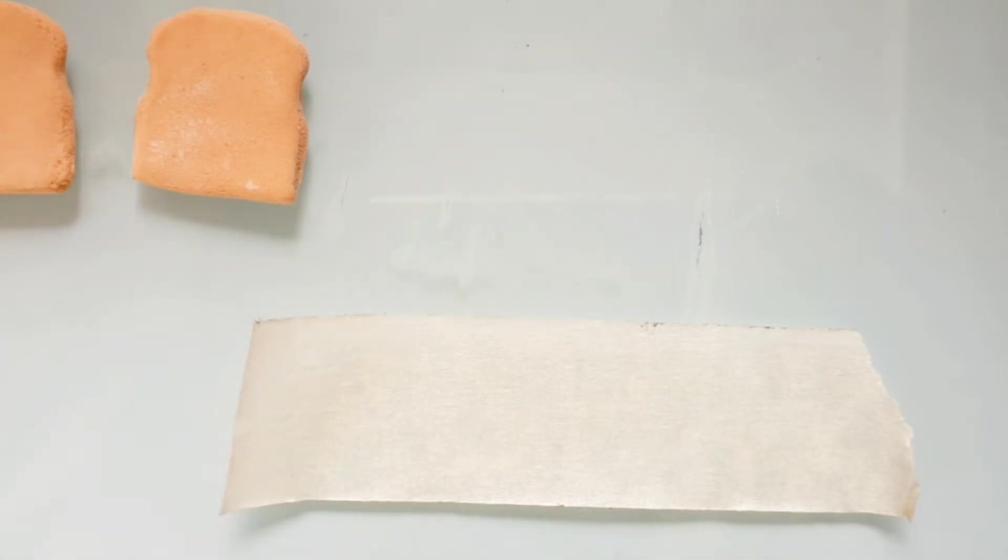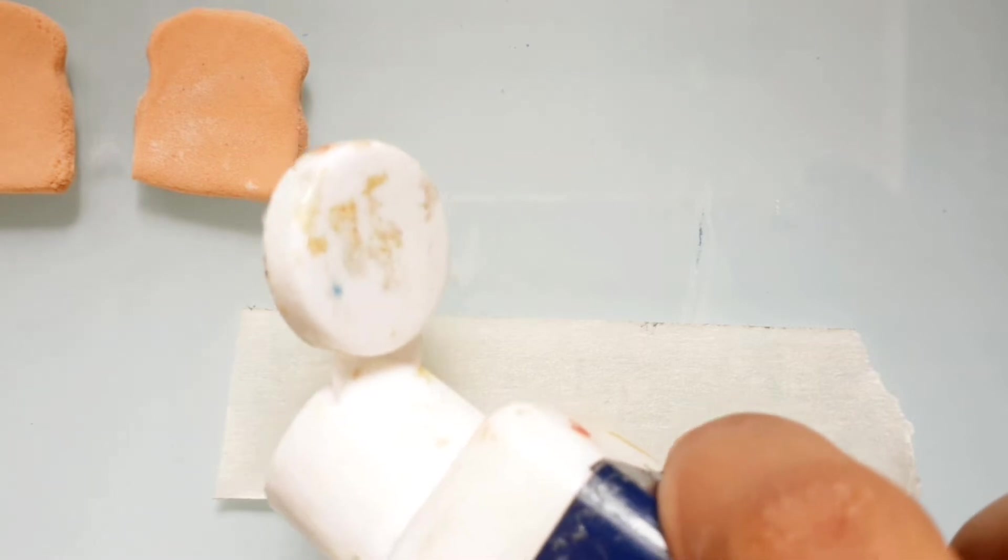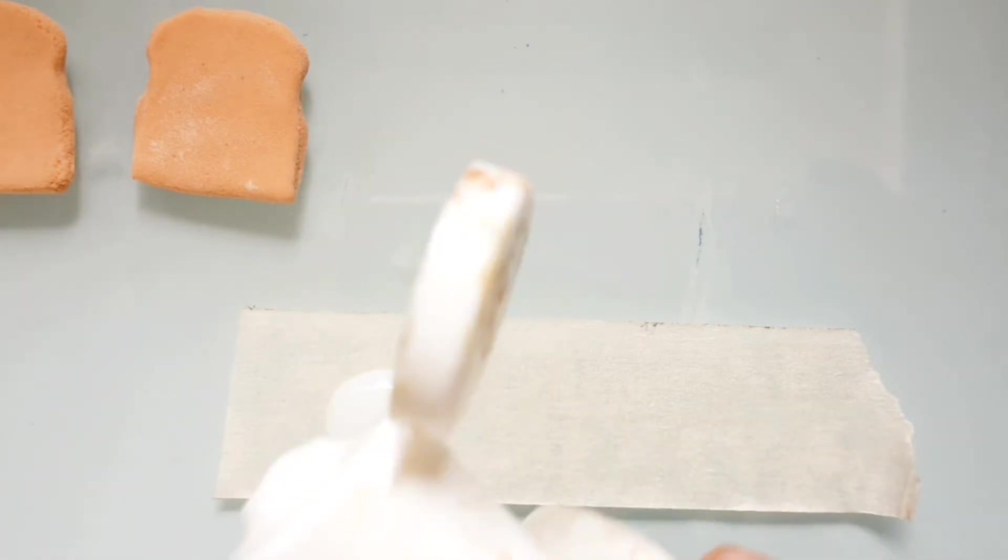Now take a piece of sticky tape and put it on your work surface so it won't be dirty. Take some glaze and put some of it for the peanut butter and the jelly.